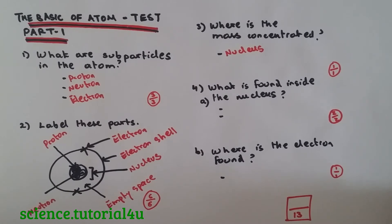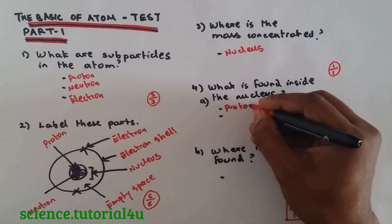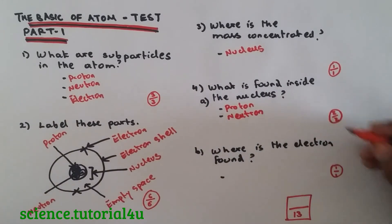What is found inside the Nucleus? Obviously, I think I've said this many times before, Proton and Neutron. So two points, two marks.